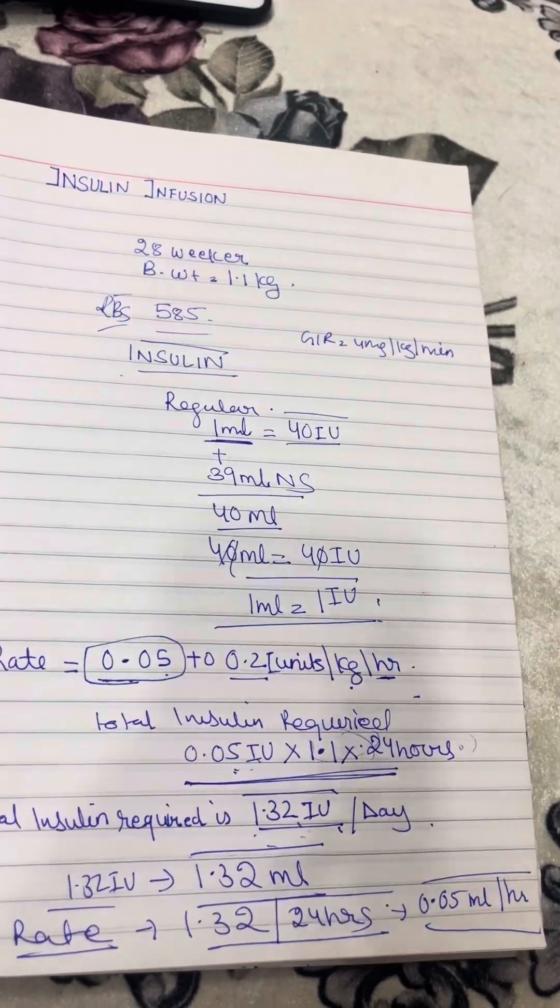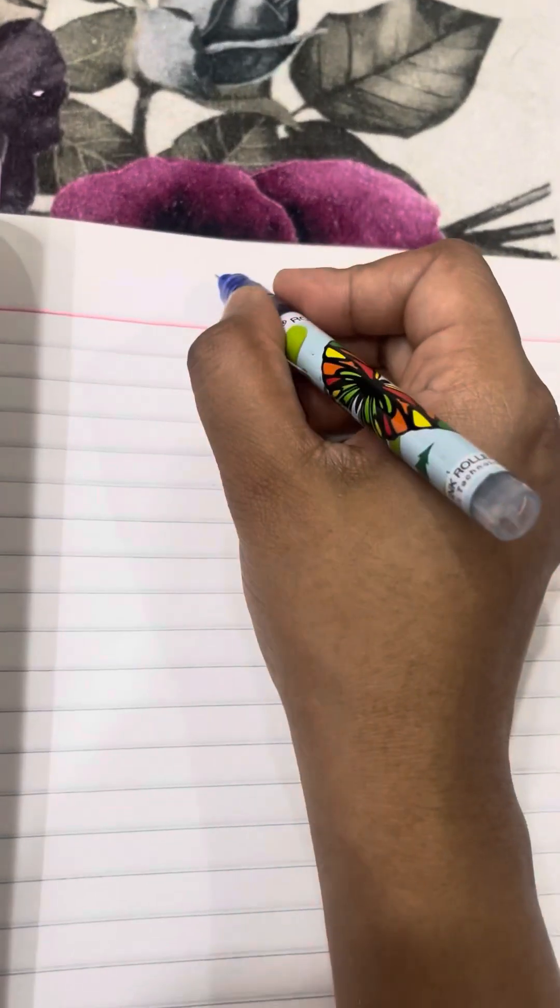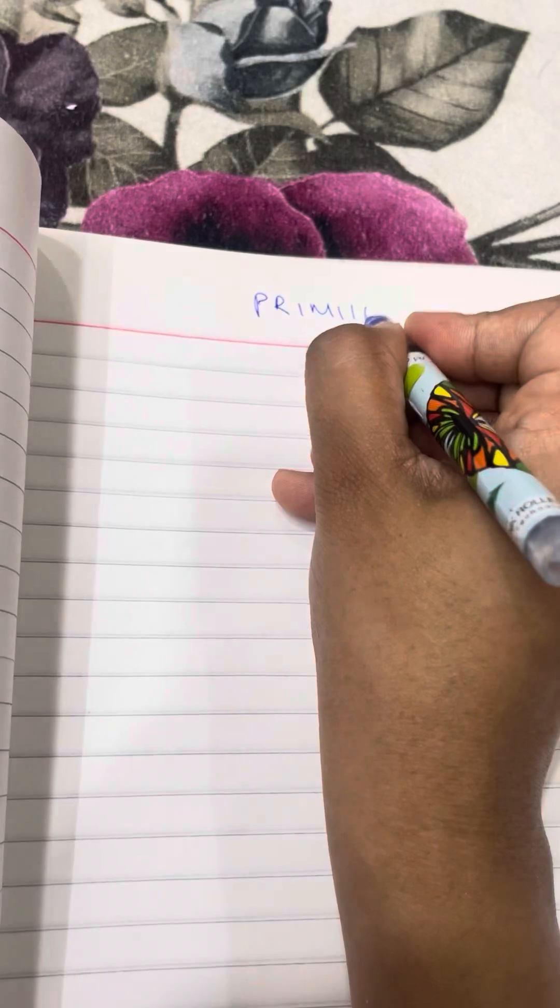The special instruction that you will give to the nurses: in insulin cases, priming of the tubing is very important. Please answer this in exams. Always priming of the tubings before starting insulin infusions. What does it mean?